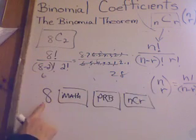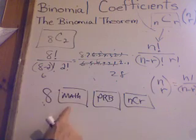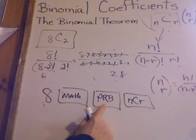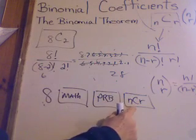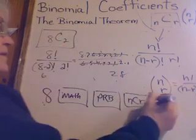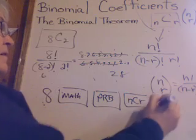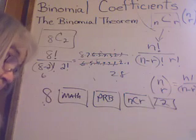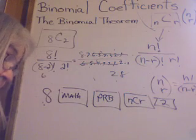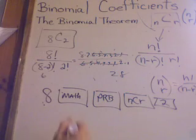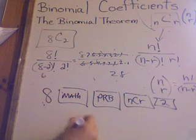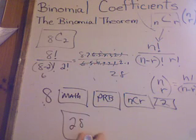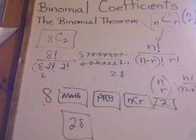So press the 8, press math, press probability, press NCR. What do you think I'm going to press next? A 2. Go do that, then hit enter and see what you get. 28. Pretty cool to get the calculator to do that!